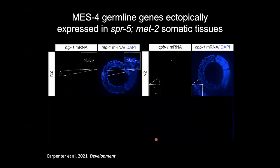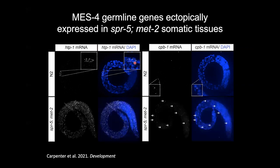We turned to single-molecule FISH to visualize this ectopic expression in somatic tissues. We chose two germline genes, HTP1 and CPB1, pulled from our RNA-seq data. In wild-type L1 larvae, mRNA for HTP1 and CPB1 is restricted to where we'd expect — Z2 and Z3, the two germ cells. But in the double mutant, HTP1 is expressed throughout the somatic tissue, and CPB1 similarly, albeit at lower levels — reflective of the ectopic expression levels in our RNA-seq data.